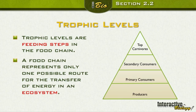A food chain represents only one possible route for the transfer of energy in an ecosystem. In the screen before, we looked at the grass getting eaten by the grasshopper, that getting eaten by the mouse, and that getting eaten by the snake.